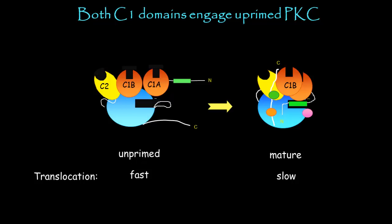This suggests that in the unprimed protein kinase C, where we have this rapid membrane translocation, the C1A and C1B domains are fully exposed, whereas in the mature enzyme there has been some conformational change which masks these domains, and so we have slower translocation.